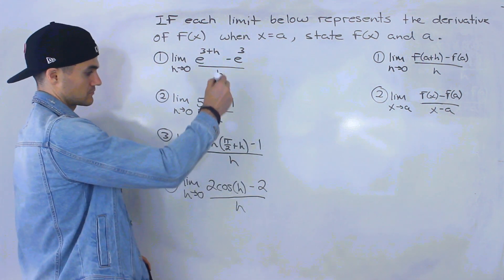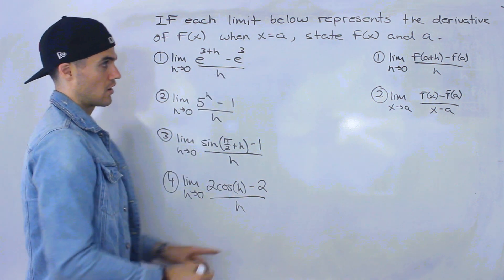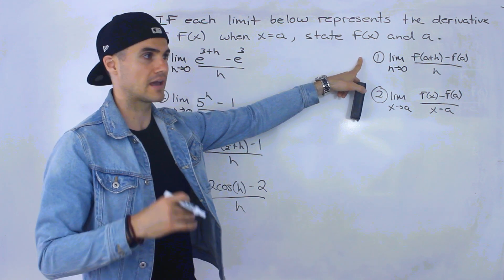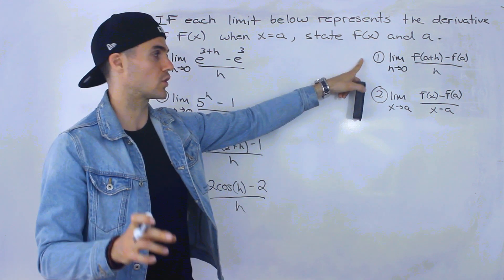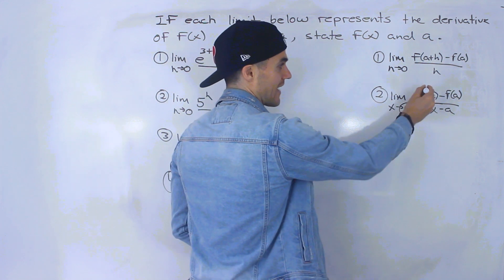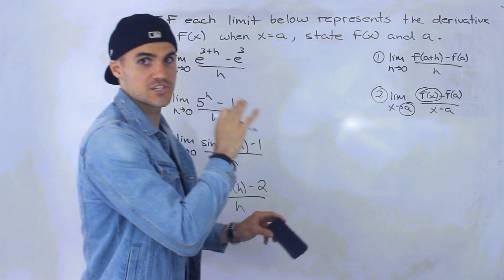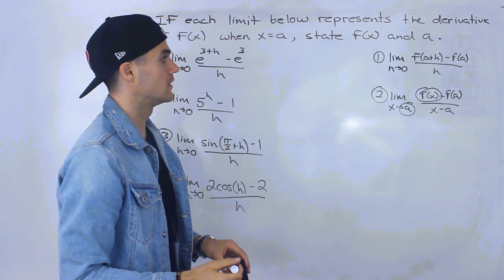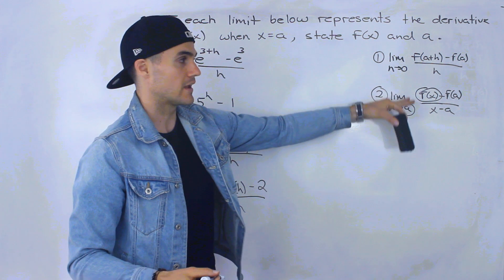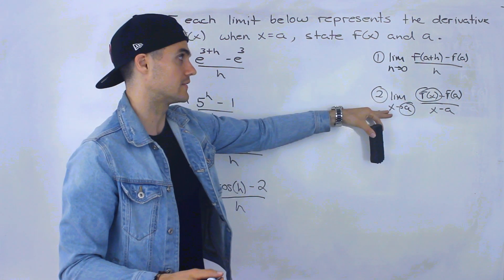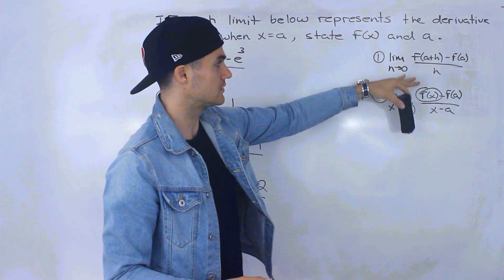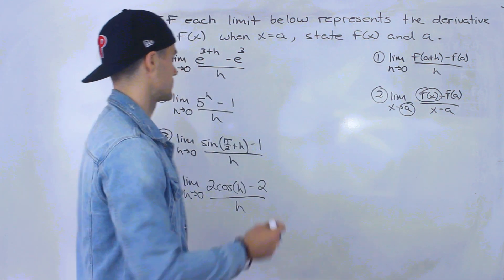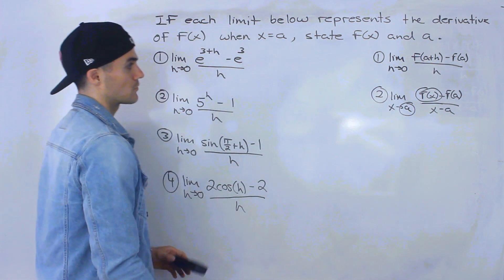Notice in this video, all of these are in that first format. Because like I mentioned in that video, the alternative format is tougher to work with — in the first format, the a and the f(x) are just stated in the limit, so there's not much work to figure them out. Versus the first format, you have to do the work and figure out what the a value is and what the function is.